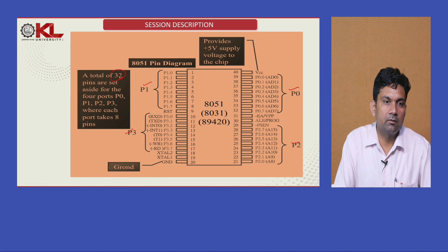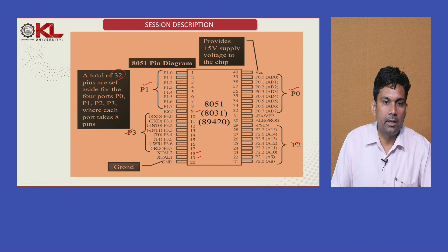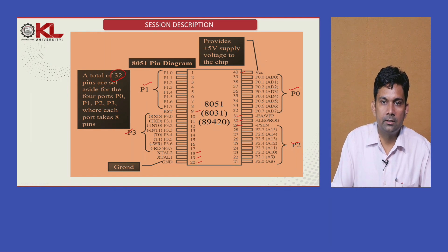32 pins are covered by these 4 ports. The rest include pin number 9 for the reset circuit, pin numbers 18 and 19 for the external crystal oscillator, pin 20 for ground, pin 29 for PSEN, then ALE, then EA, and pin 40 — these are the remaining 8 pins.